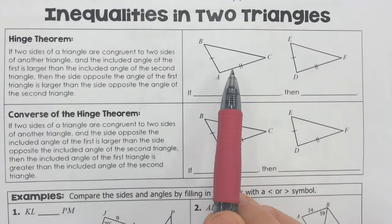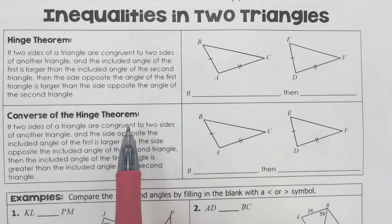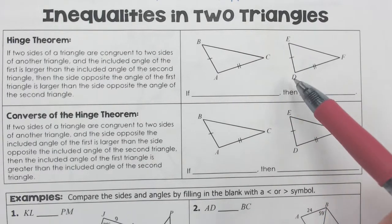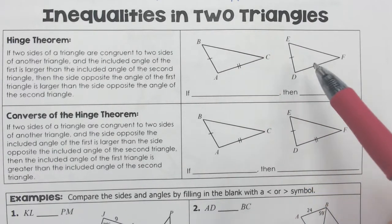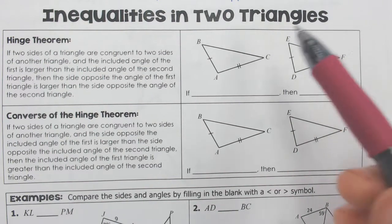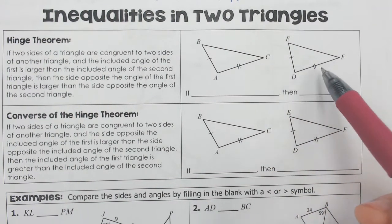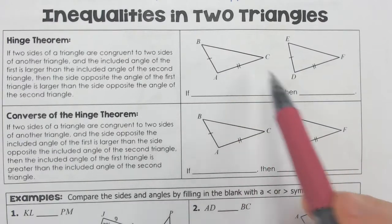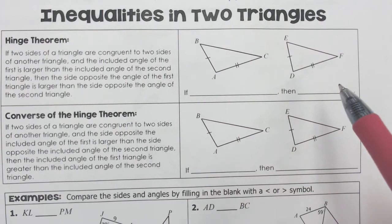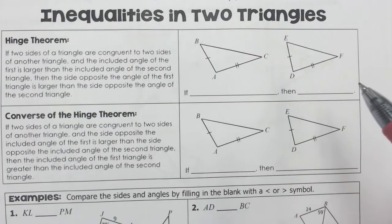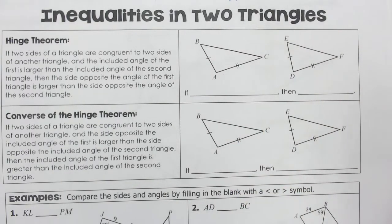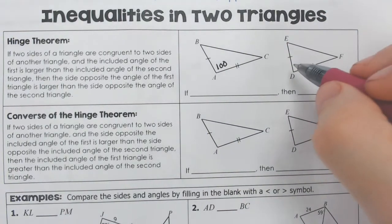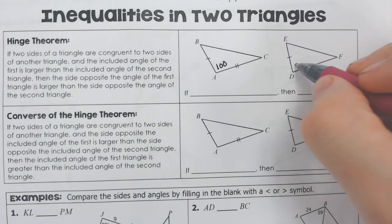So the hinge theorem has a whole bunch of things you can think about. You could read all this, but the hinge theorem in general means that these two triangles are nearly identical. Notice how there are two sides here and two sides here, and if they tell you that two sides are equal to each other on two different triangles, but the only thing that is different is the angle in the middle, let's say that angle A was 100 degrees, but angle D was 50.